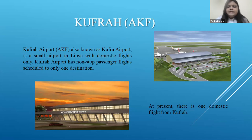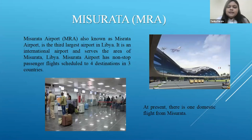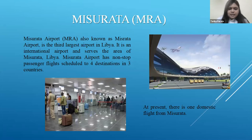Kufra airport is a small airport in Libya with domestic flights only. It has non-stop passenger flights scheduled to only one destination, and at present there is one domestic flight from Kufra. Misurata airport is the third largest airport in Libya. It is an international airport serving the Misurata area and has four destinations in three countries. There is only one domestic flight from Misurata at present.